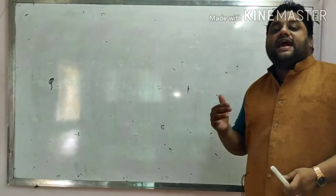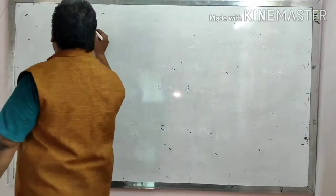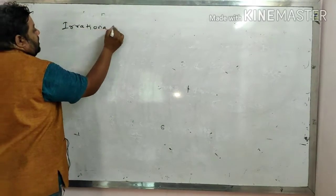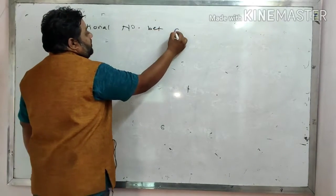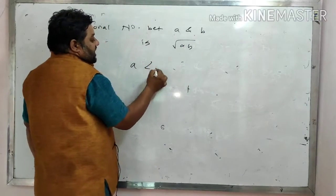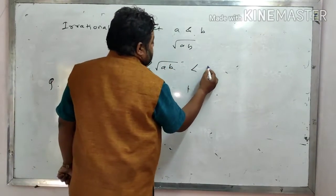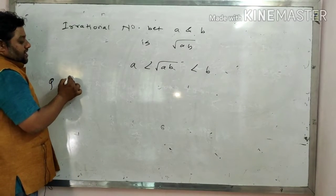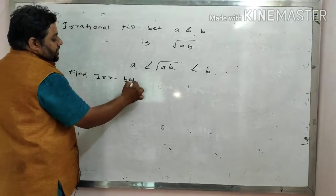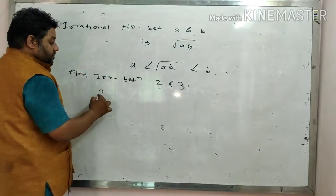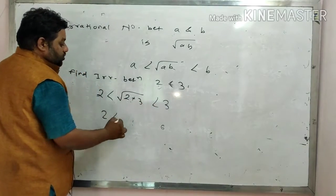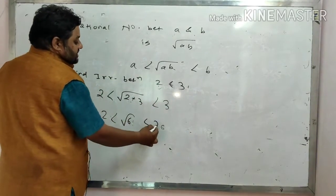Now in this video we will be discussing inserting an irrational number. The first concept: an irrational number between A and B is √(AB), meaning A < √(AB) < B. For example, if they ask to find an irrational between 2 and 3, it will be 2 < √(2×3) < 3, so 2 < √6 < 3.